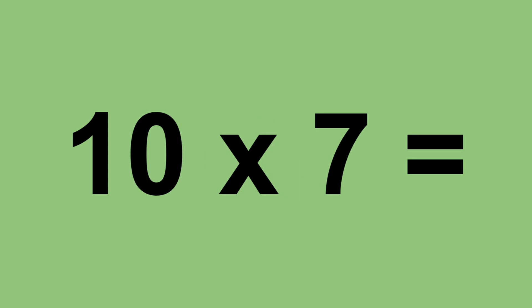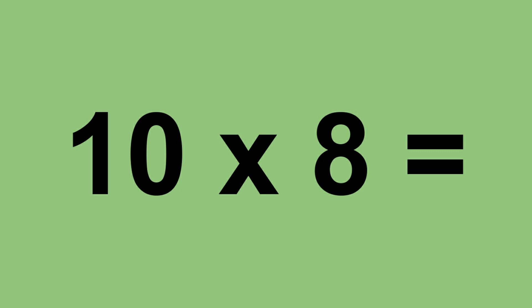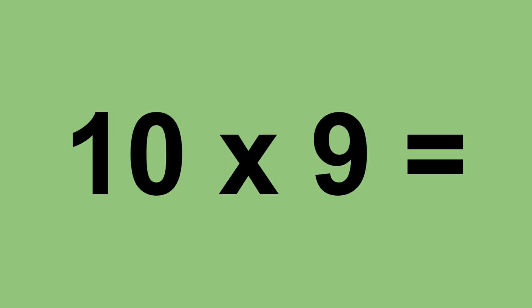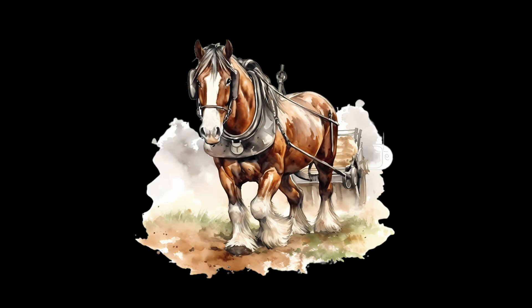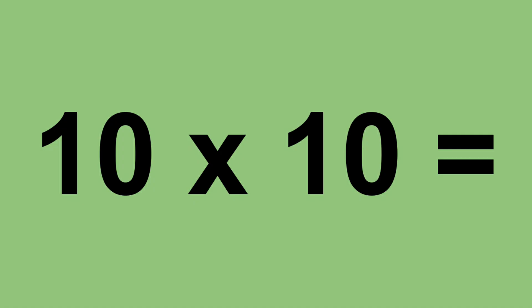10 times 7 equals 70. 10 times 8 equals 80. 10 times 9 equals 90. 10 times 10 equals 100.